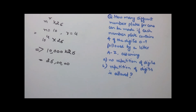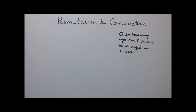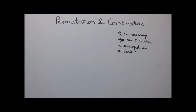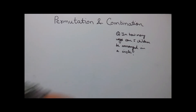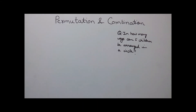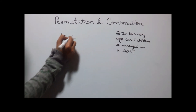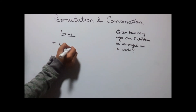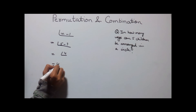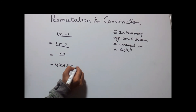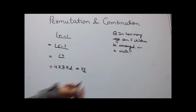Example 3: In how many ways can 5 children be arranged in a circle? This is the 4th type of permutation — arranging objects in a circle. The formula is (n − 1)!. Here n = 5, so it becomes (5 − 1)! = factorial 4 = 4 × 3 × 2 × 1 = 24 as the answer.